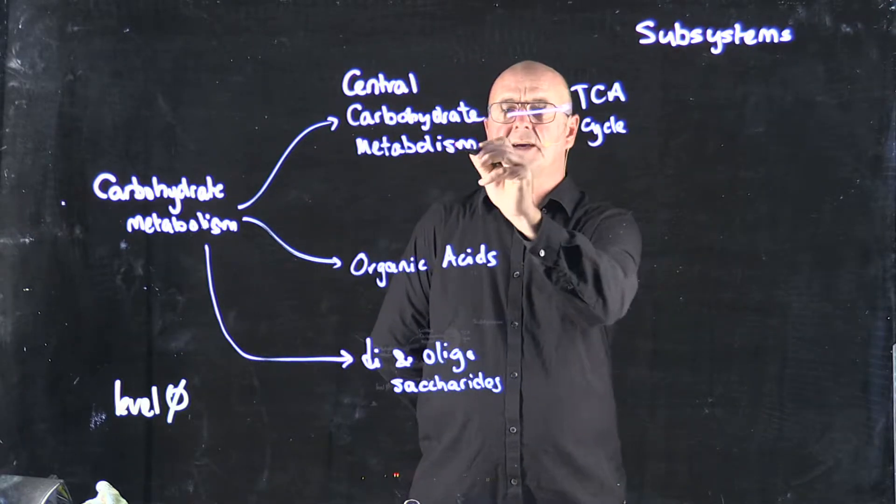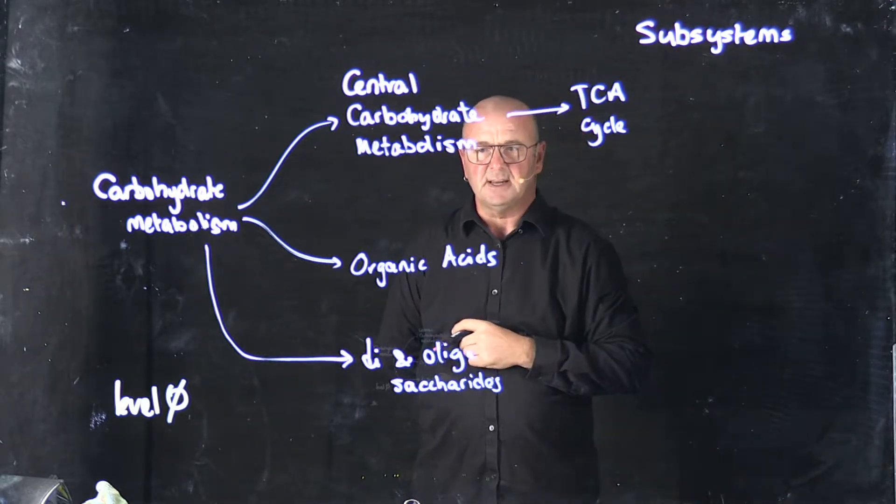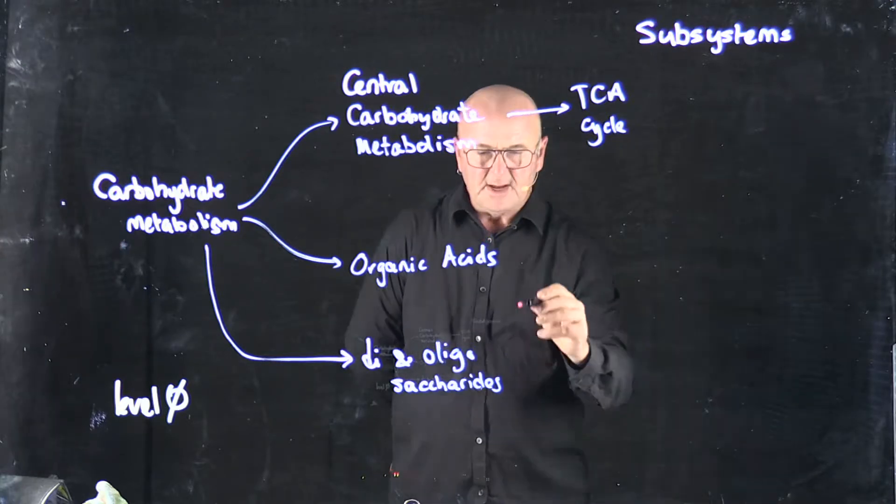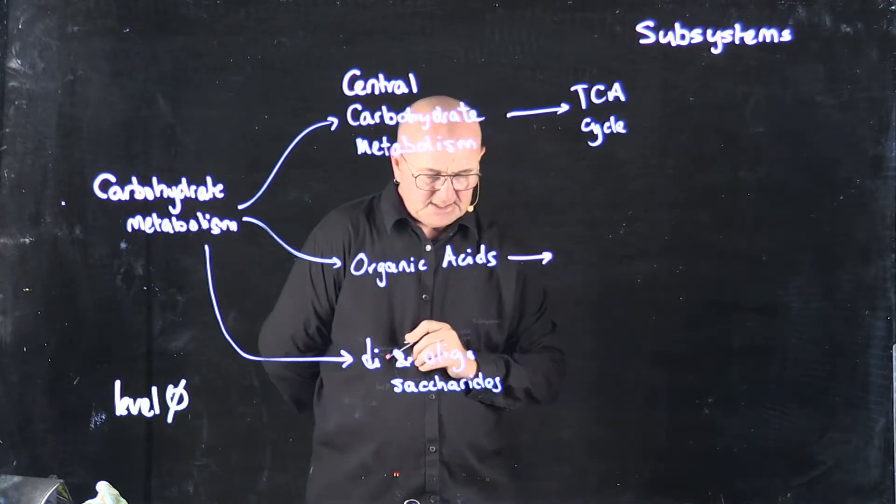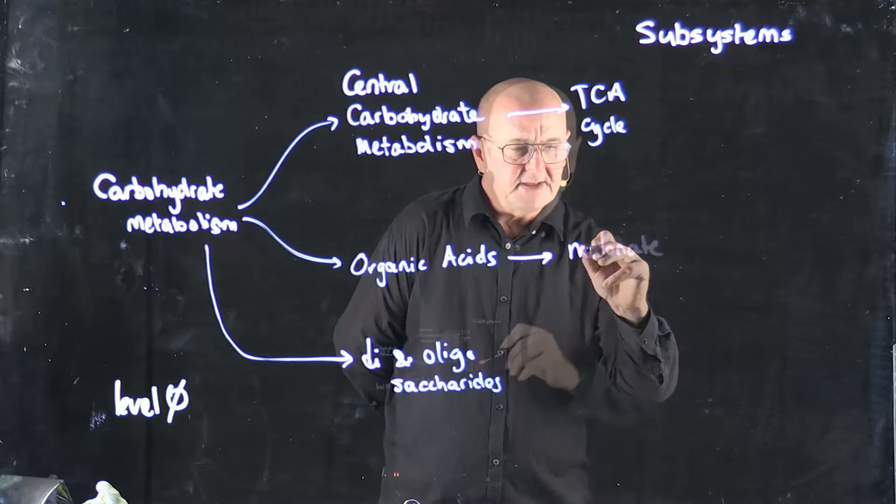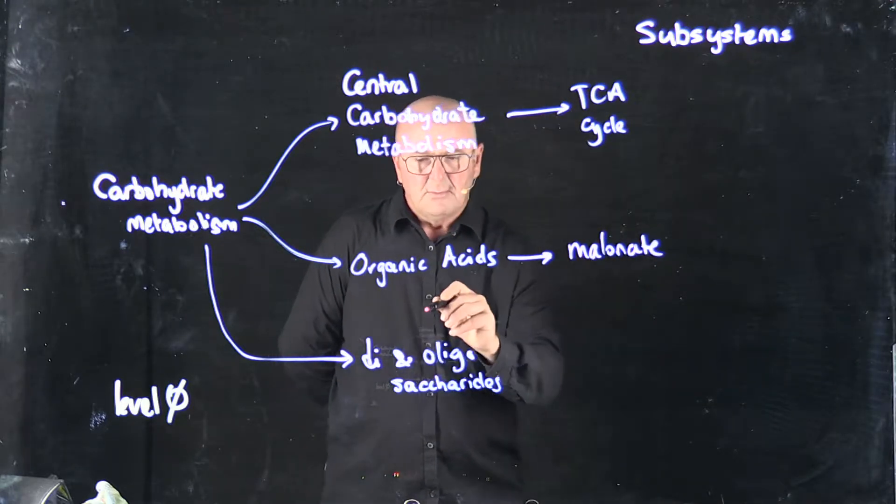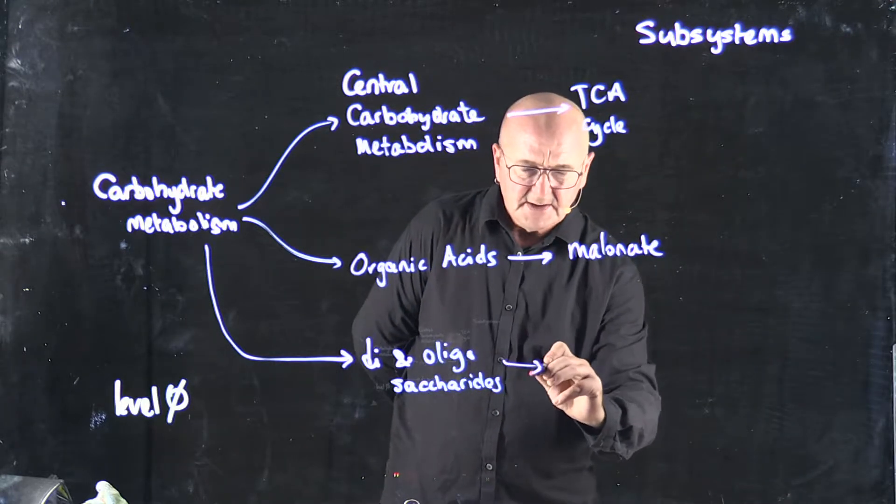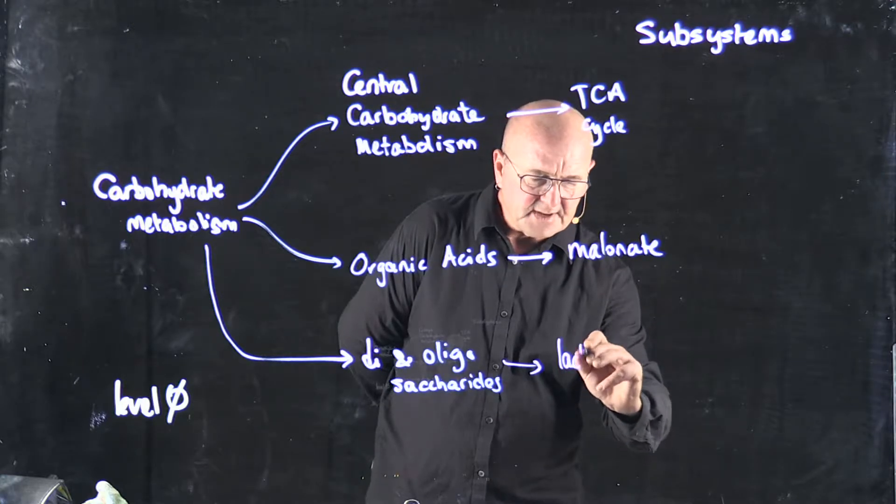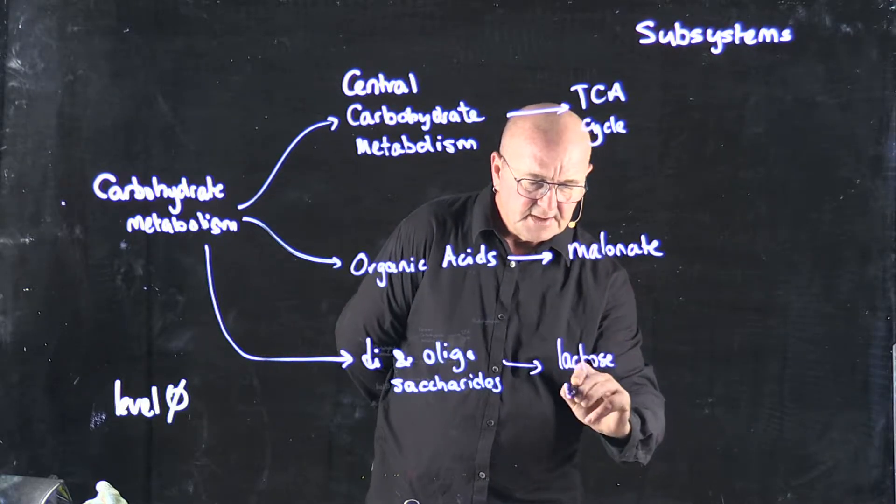Within central carbohydrate metabolism, we have the TCA cycle. Within organic acids, we might have malinate. And within the di- and oligosaccharides, we might have lactose utilization.